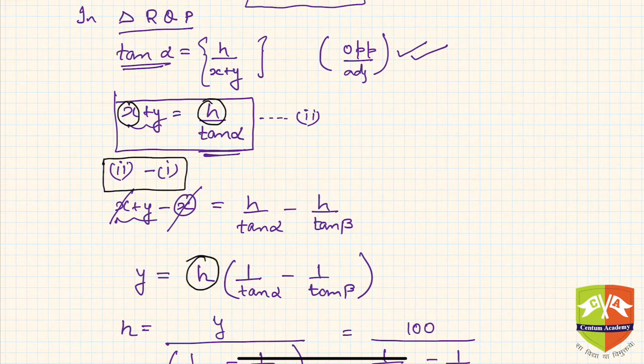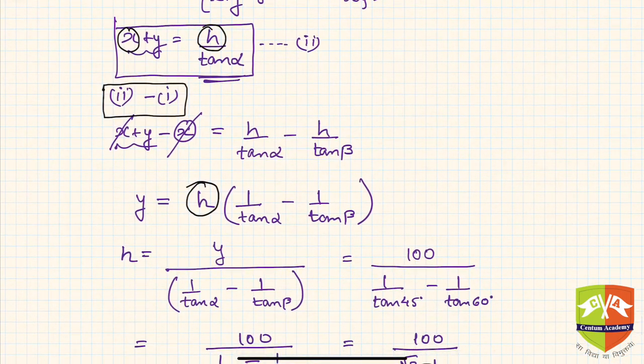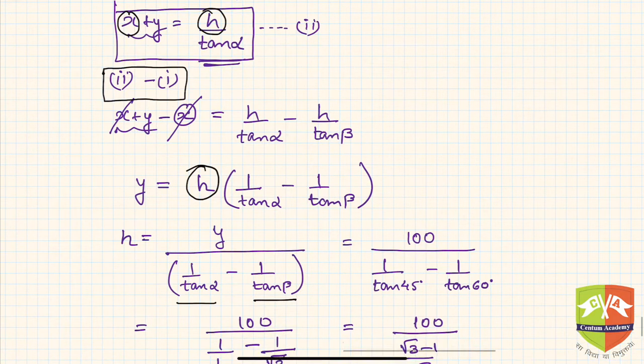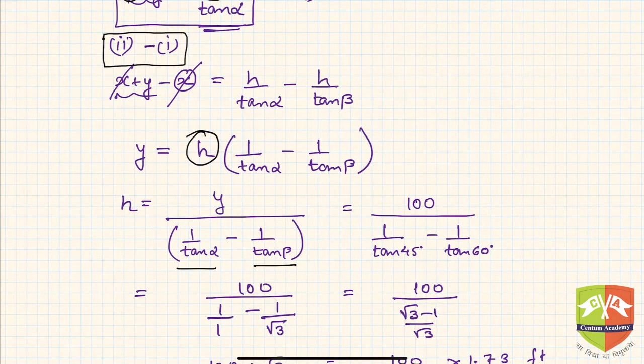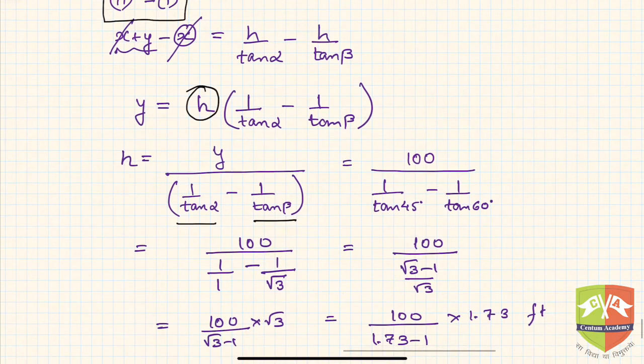I am left with all knowns and only one unknown, that is h. Hence, if you do the simplification, you will get h = y / (1/tan α - 1/tan β). Now when you deploy values, it's always good practice to deploy values towards the end if the problem is not that complicated.